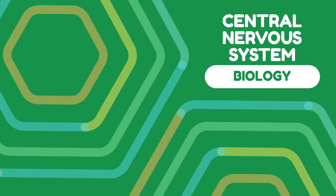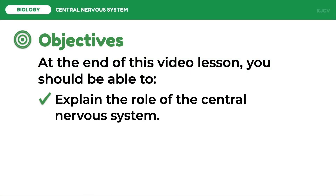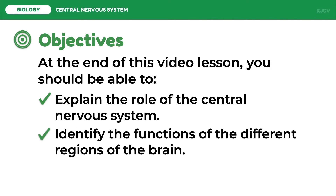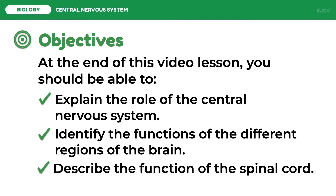In this lesson we are going to discuss the central nervous system. At the end of this video lesson you should be able to explain the role of the central nervous system, identify the functions of the different regions of the brain, and lastly describe the function of the spinal cord.